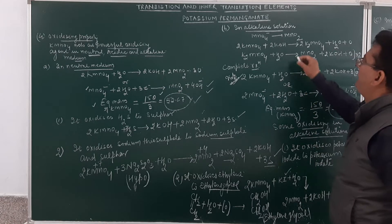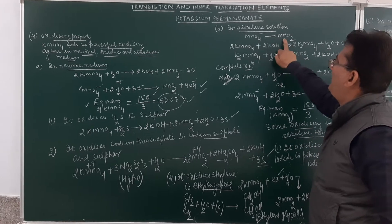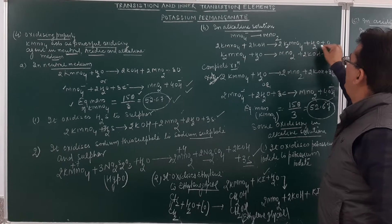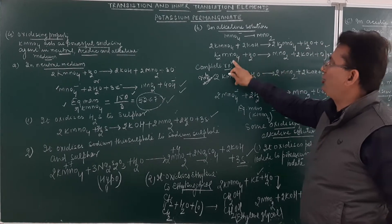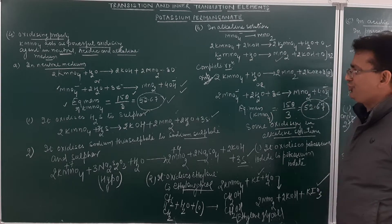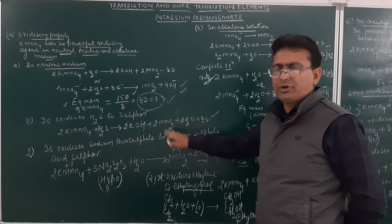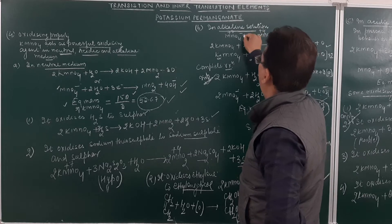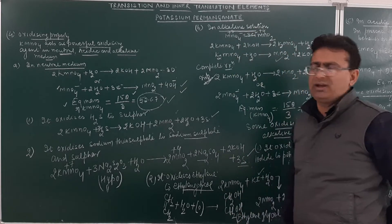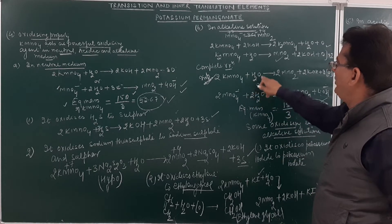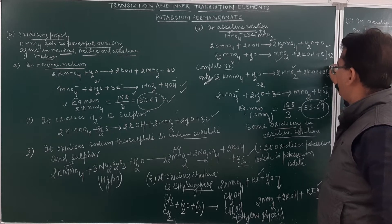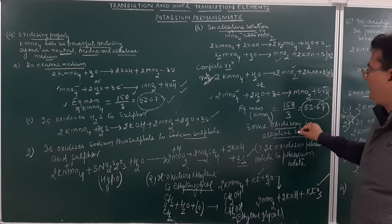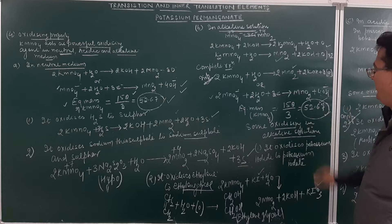In alkaline solution, the manganate ion will be converted into MnO2. KMnO4 reacted with potassium hydroxide will form K2MnO4 plus water plus oxygen. This K2MnO4 will react with water again and be oxidized to MnO2. Here, manganese goes from +7 to +4 with a gain of 3 electrons. In ionic form, the manganate ion gains 3 electrons to form MnO2. The equivalent mass is 158 divided by 3, equal to 52.67.